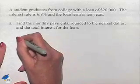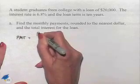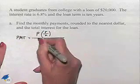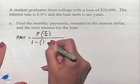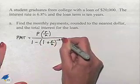To find the payment, we're going to use the formula payment equals P times R over N divided by 1 minus 1 plus R over N raised to the negative N times T power.